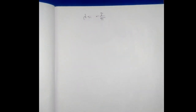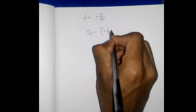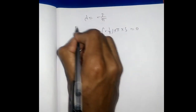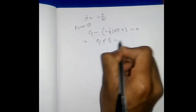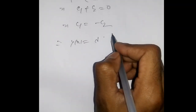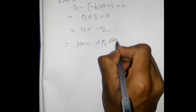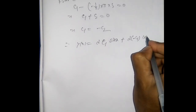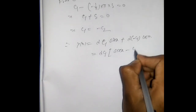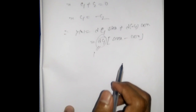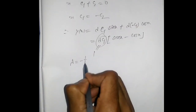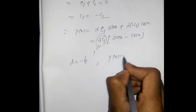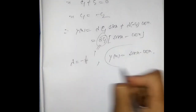For λ = -1/π: from equation 1, C₁ - (-1/π)·π·C₂ = 0, giving C₁ + C₂ = 0, so C₁ = -C₂. Then y(x) = λ C₁ sin x + λ(-C₁) cos x = λ C₁(sin x - cos x). Taking the constant as unity, the eigenfunction corresponding to λ = -1/π is y(x) = sin x - cos x.